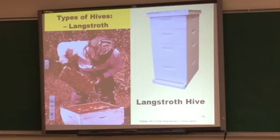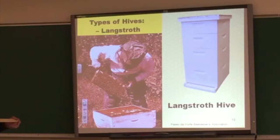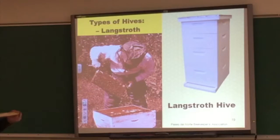There are many different types of hives in the bee kingdom, but one of the more popular ones is called the Langstroth hive. This hive consists of three top layers, a queen catcher, and a base. It also has a brood box where the queen likes to lay her eggs.